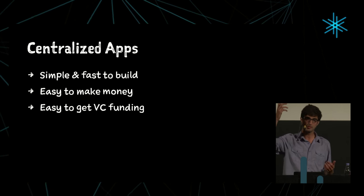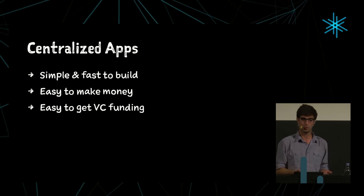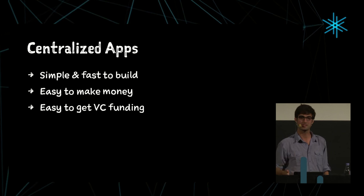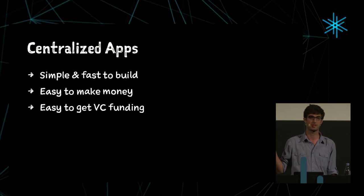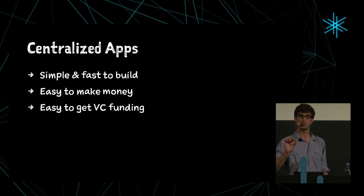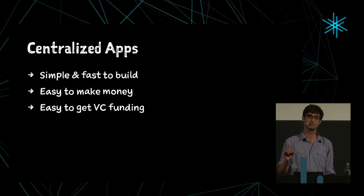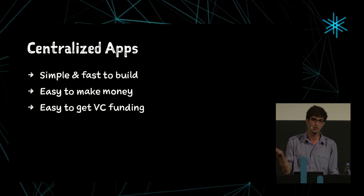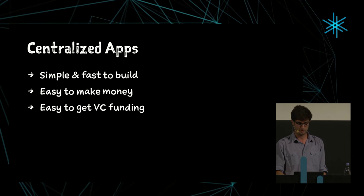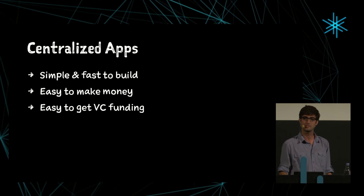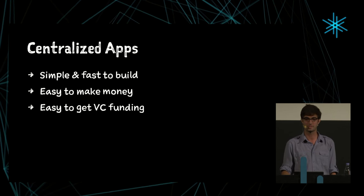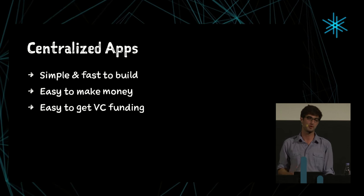Centralized apps are apps where you typically have a server and a client — basically a website, though native apps can be built this way too. They're simple and fast to build, and all the tools we use are designed to support this model. It's really easy to make money on these kinds of apps because you have clear points of control — you can decide tomorrow to show ads, change your terms of service, and so on. It's also easy to get VC funding because investors understand how they work.